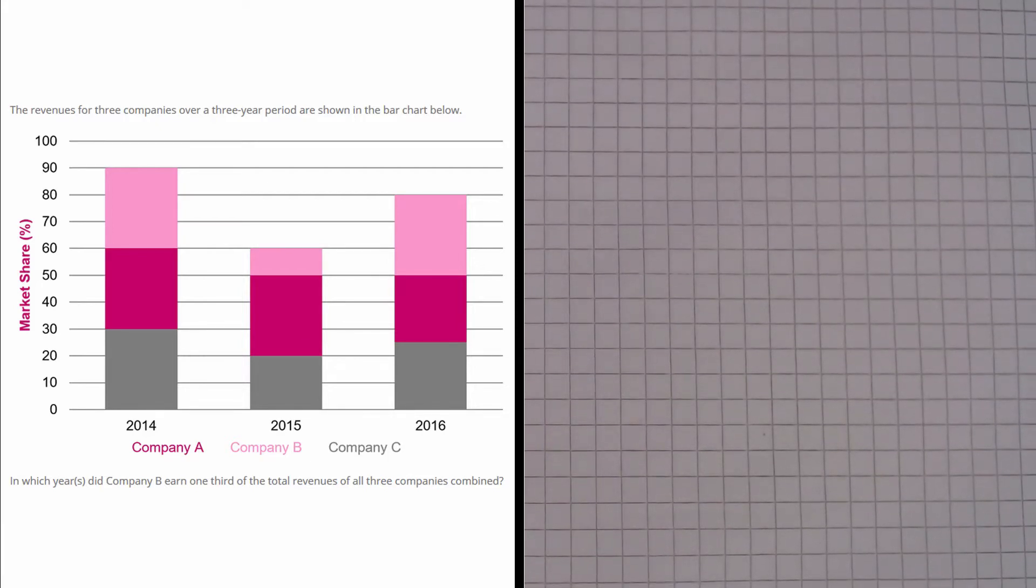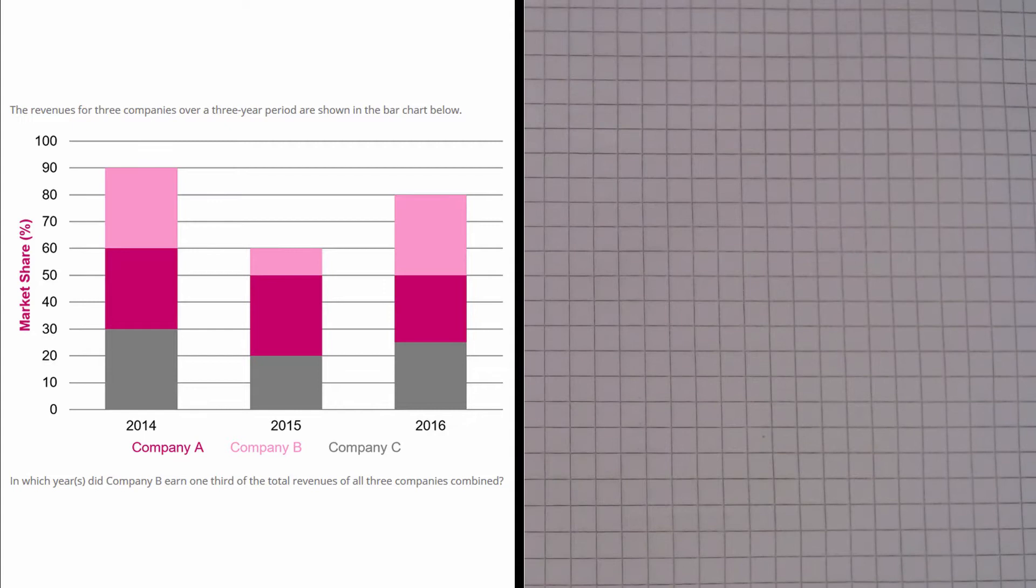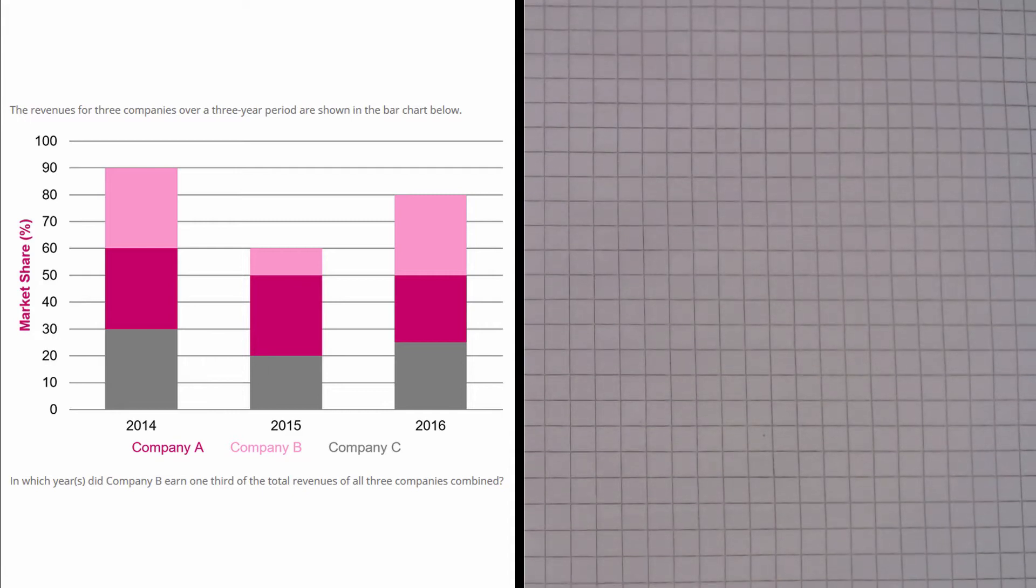So in this question we are given a chart that represents the revenues of three different companies over a three year period. And the question asks us, in which years did Company B earn one third of the total revenue of all three companies combined?